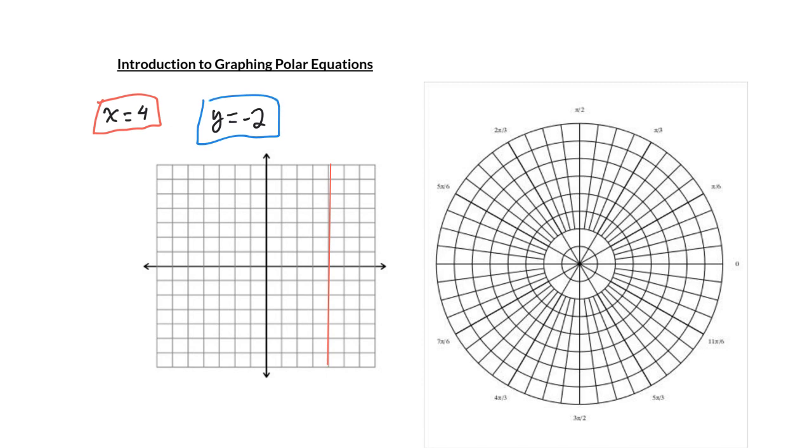Meanwhile, if I was going to graph y equals negative 2, I would end up with a horizontal line through negative 2, because this time the y value is fixed and the x is allowed to vary. And as x varies, it moves left and right.